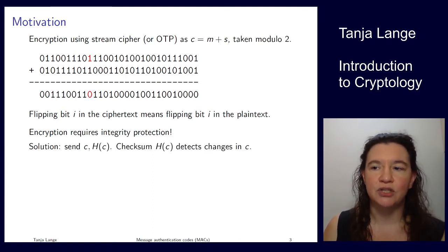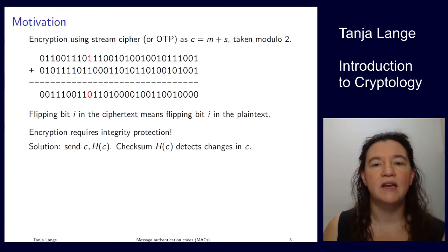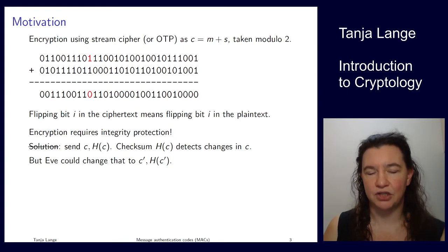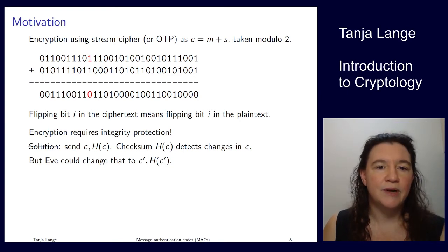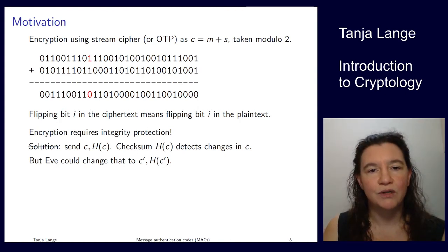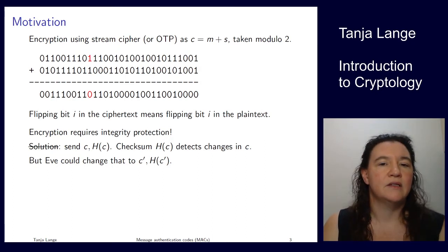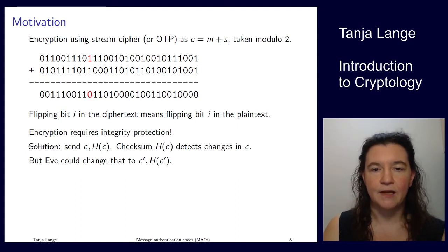One way to achieve integrity protection is what you know from downloading data: you add a checksum. If any bit got flipped in transit, you compute the checksum and notice the change. But this is not sufficient against a malicious change. If it is Eve trying to modify the data, she could just change the ciphertext to some c-prime, and since there is no secret in the hash, she can simply compute the hash of c-prime. So this is not a solution.